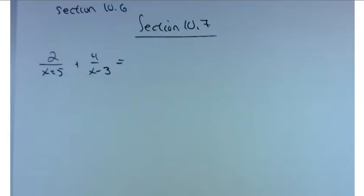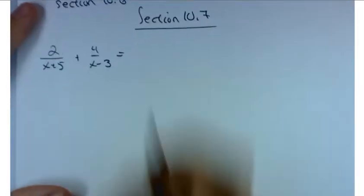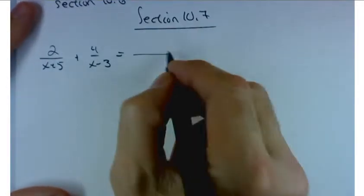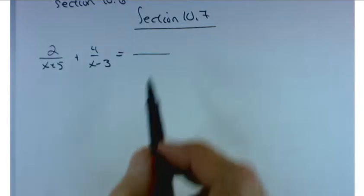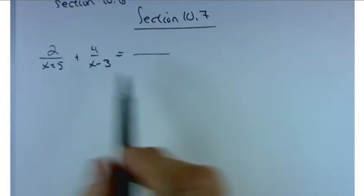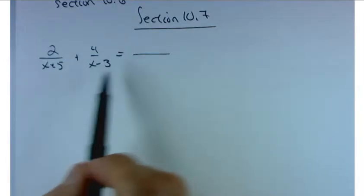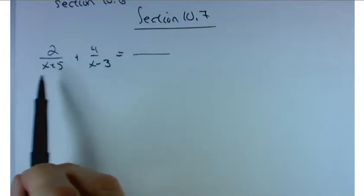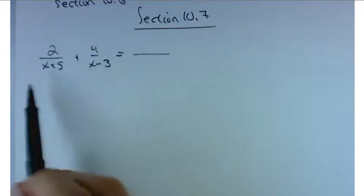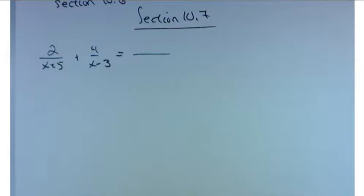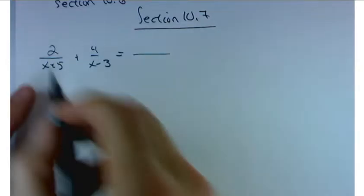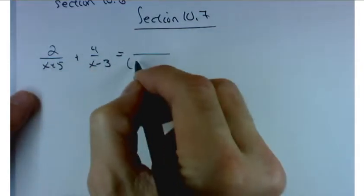Section 10.7 is going to discuss a topic called partial fractions, and what's going to happen is that we're going to learn how to decompose two things. Now let's take a look at things in a direction that you're used to. If you were to add these two fractions together, what would you need first? Common denominator. And that common denominator in this case is really going to be the product of both of those.